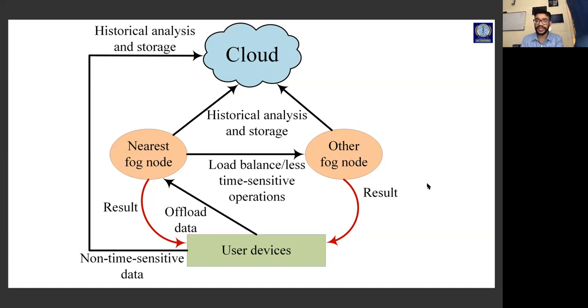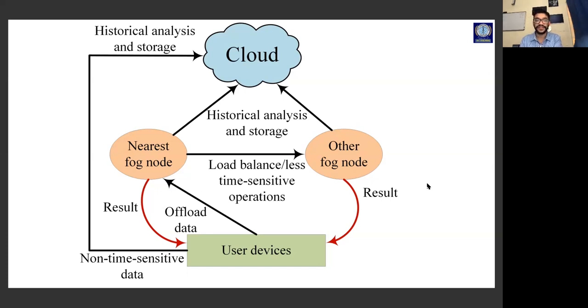Operations are performed in the fog layer and results are passed to the user devices. If data needs to be stored for historical analysis, it is then offloaded to the cloud. When there is non-sensitive data, user devices can directly send it to the cloud without burdening the fog nodes. The data does not need to travel all the way to the cloud and back — it stays closer to the sensor nodes, hence delivering faster results.